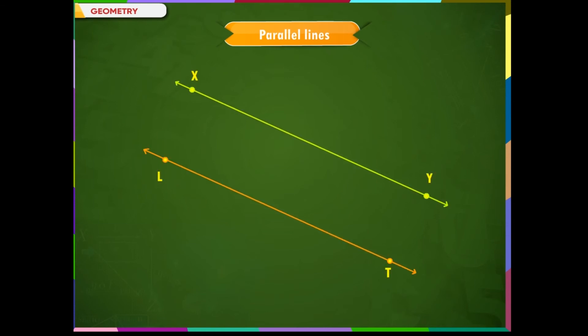Now, let us observe the lines XY and LT on the screen. They do not meet at any point. Such lines are called parallel lines. Such lines always have a fixed distance between each other.